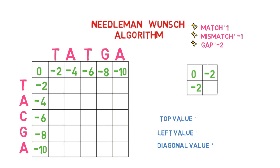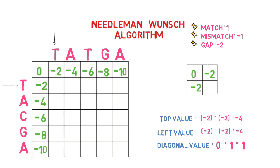So, to find the value of box number 1, we start with the top side, which is minus 2, and we add a gap penalty of minus 2 for every top movement, so the answer is minus 4. Then we take the value from the left, which is also minus 2, and add a gap penalty to get minus 4. Finally, we take the value from the diagonal box, which is 0. Taking a value from the diagonal box leads to the addition of a match or mismatch penalty. In this case, T corresponds to T, so we add 1 to 0 to get 1.